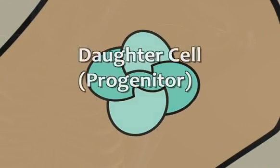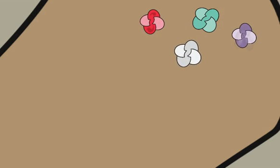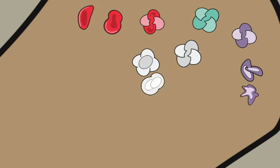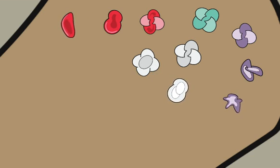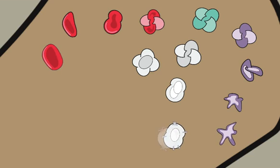The daughter cells, on the other hand, are known as progenitor cells because they continue a process of multiplying and dividing into different types of cells. This process is known as differentiation, where each new type of progenitor cell continues to divide and multiply into new types of cells until finally reaching their full maturity and differentiation.